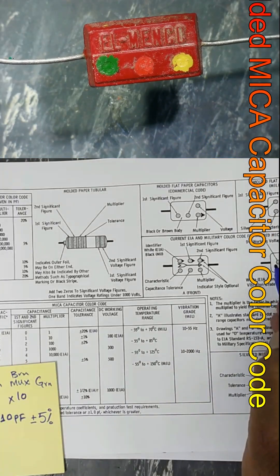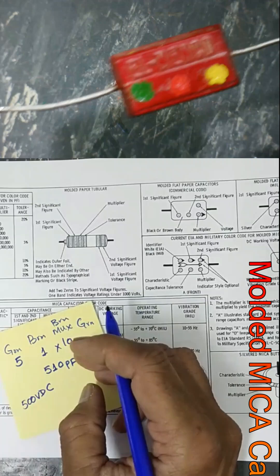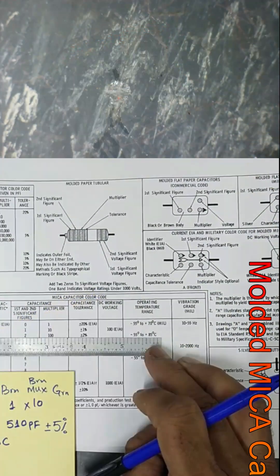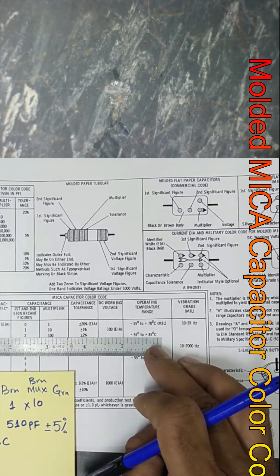And then red indicates the operating temperature: minus 55 to 85 degrees Celsius.